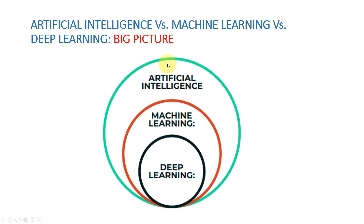This picture is actually very important — it gives the big picture from a very high level. Artificial intelligence is the largest umbrella — that's the big thing, that's the AI. Within the AI, as a subset of it, there is machine learning. And within machine learning, as a subset of it, there is deep learning. That's the overall overview and the differences between artificial intelligence, machine learning, and deep learning.